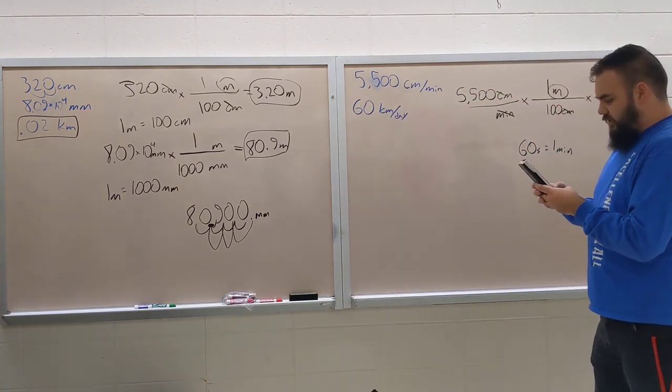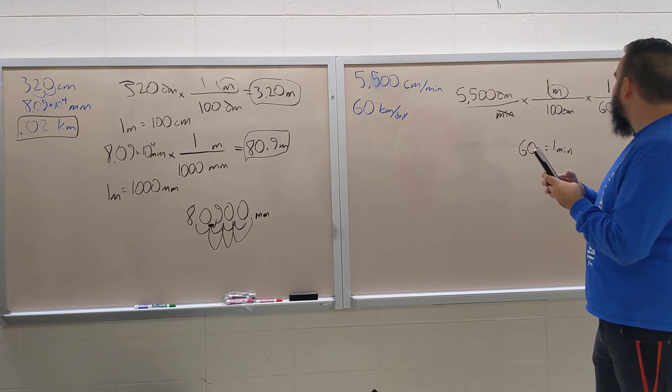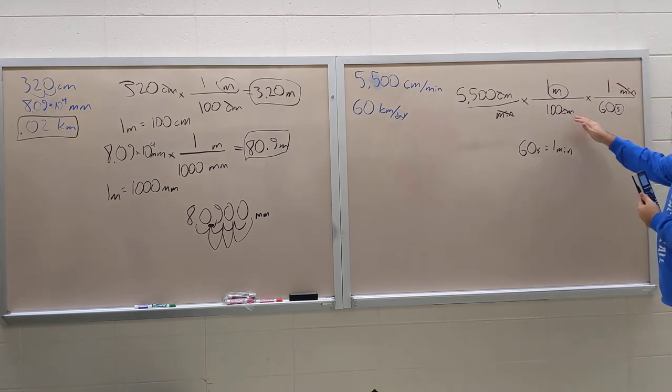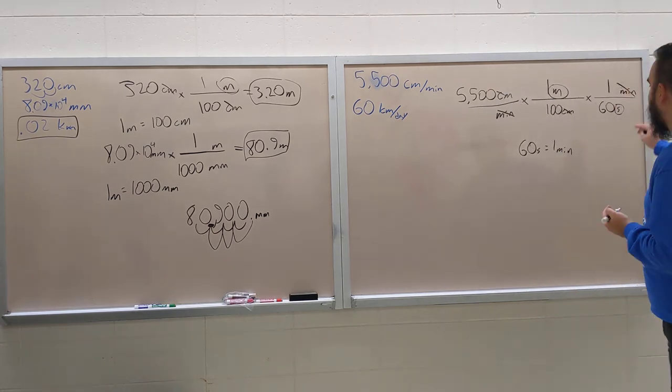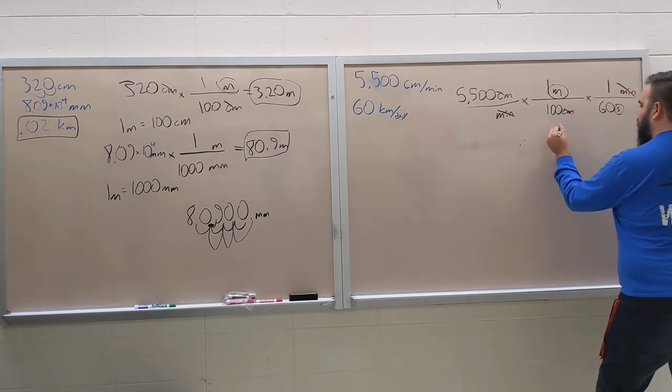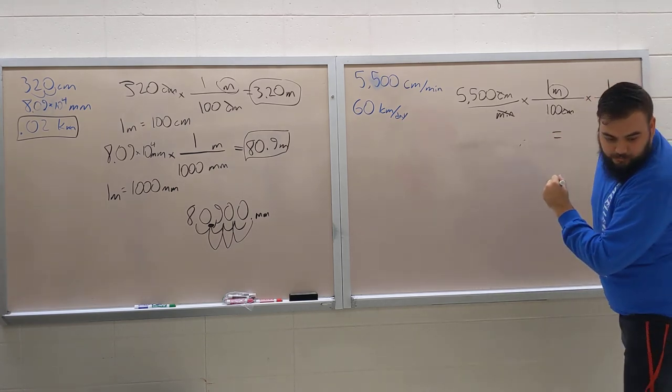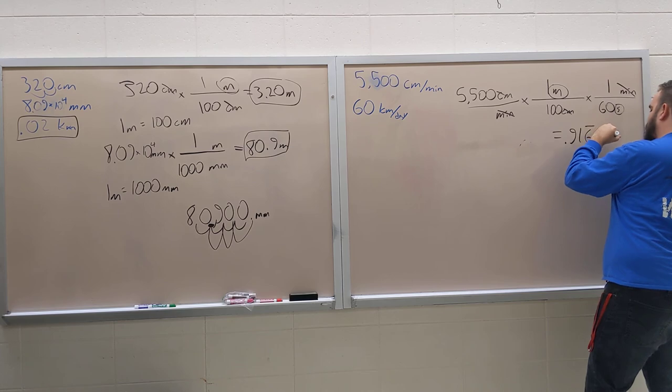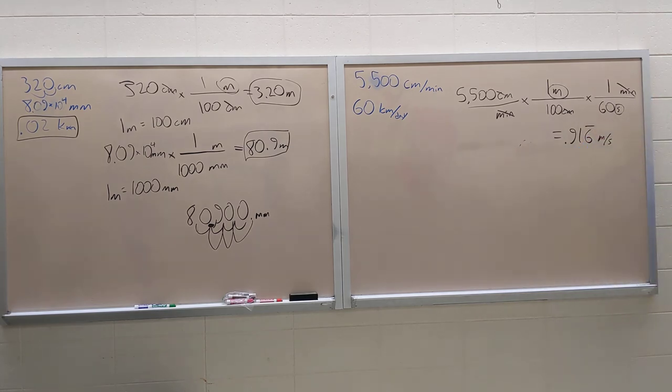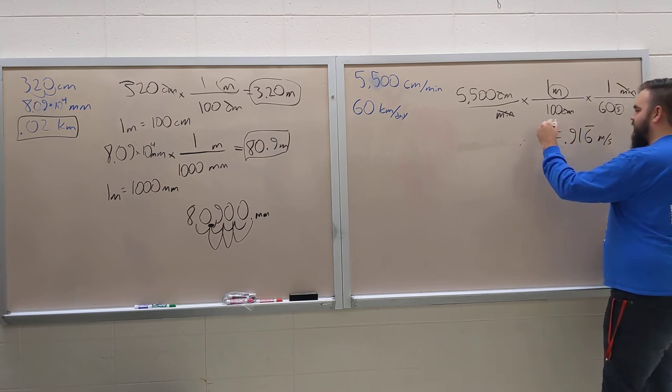Now all we have to do next is just type it into our calculator. We're going to do 5,500 divided by 100 and then divided by 60. That's going to give us an answer of about 0.916 repeating meters per second. That's our answer.